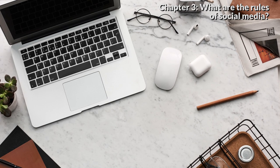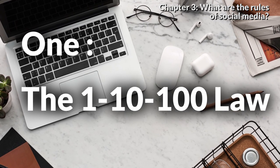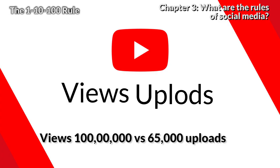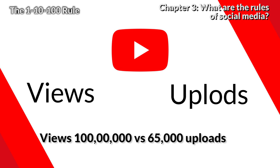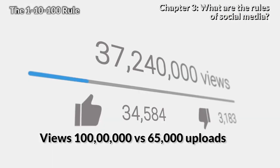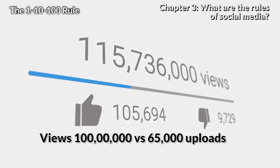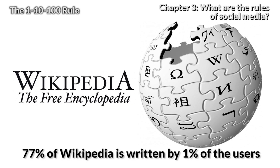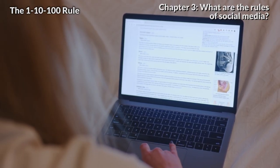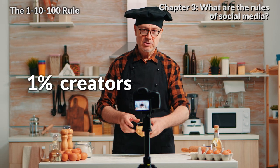What are the rules of social media? Number one: the 1-10-100 law. In 2006, the Guardian reported a huge gap between YouTube views and uploads — about 100 million daily views versus 65,000 video uploads per day. Similarly, half of Wikipedia posts were edited by less than 1% of editors.